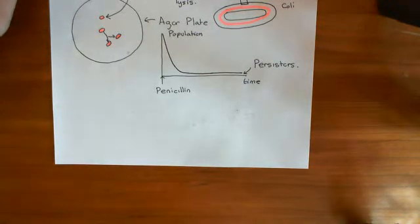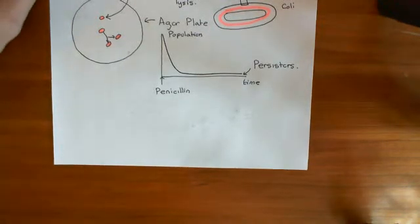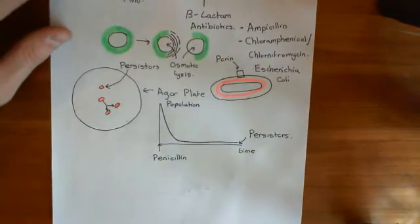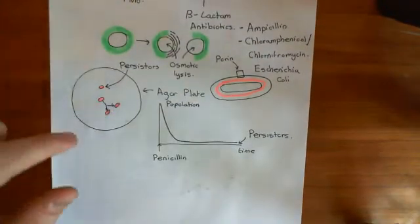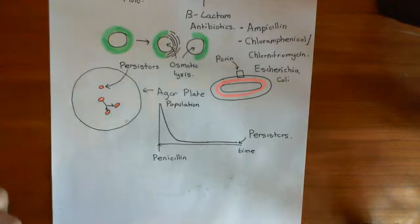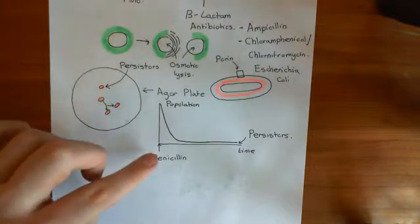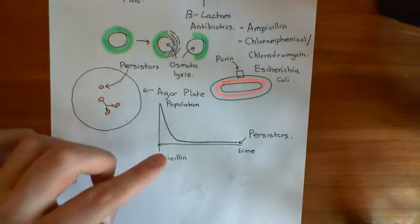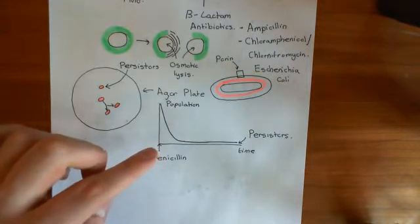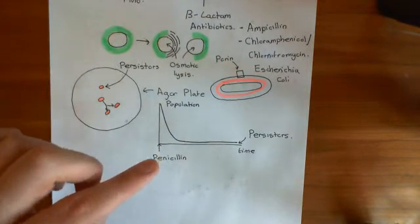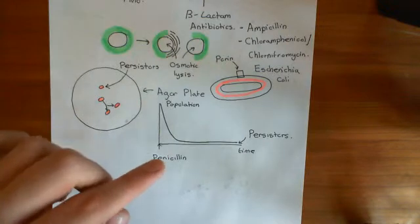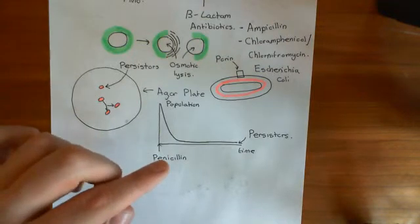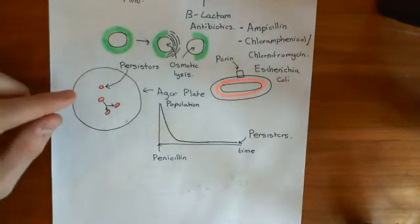Welcome to this next video on bacterial persistence. So far we have seen how if you expose a bacterial colony of E. coli to penicillin antibiotics such as ampicillin, then it will reduce the population hugely, but it won't reduce it to zero. The reason it won't reduce it to zero is that some of these bacteria are not sensitive to penicillin, and these are called the persisters. The reason they're not responding to the penicillin is because they are not dividing.